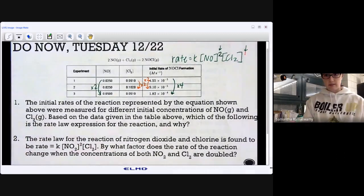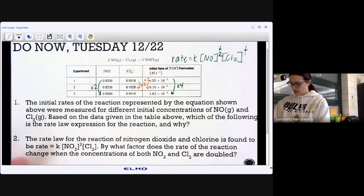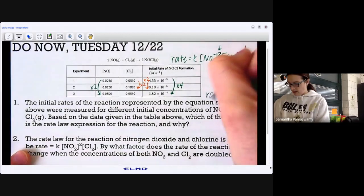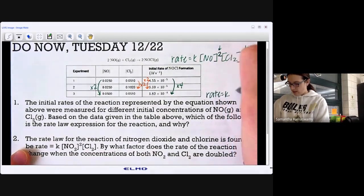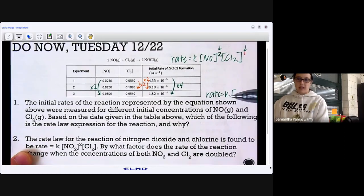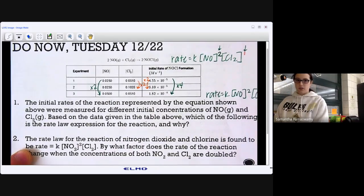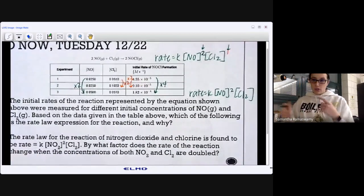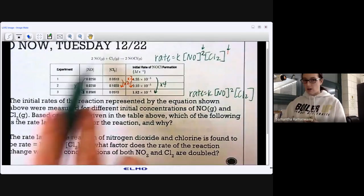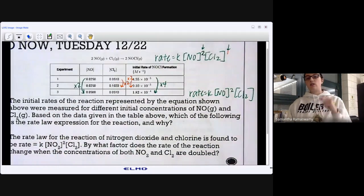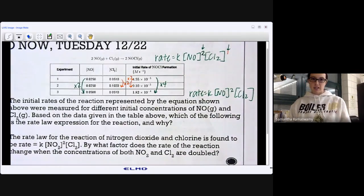So we just wrote the rate law. Again, if I want to write it so it looks a little bit nicer, my rate law is rate equals K. So rate laws always start with rate equals K times the concentration of NO squared times the concentration of Cl2. Now, do these orders match the coefficients? Yes. But again, they don't always. You cannot use the coefficients as your orders of reaction. You have to use the data.